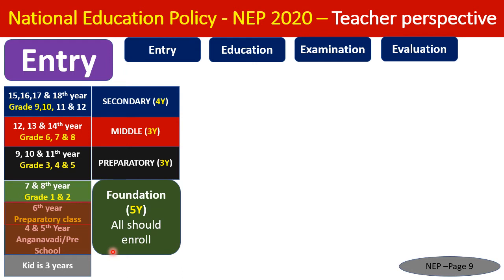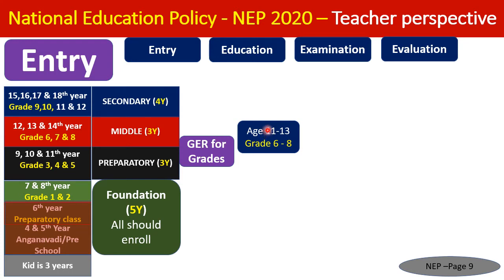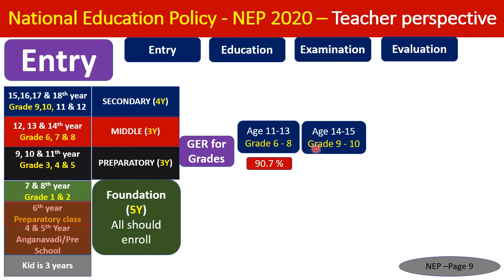Regarding the current Gross Enrollment Ratio: for kids aged 11–13 (Grades 6–8), UNESCO records show only 90.7% are in school — nearly 10% are out. For ages 14–15 (Grades 9–10), only 79.3% remain in school, meaning about 20% have dropped out. As grades increase, dropout rates also increase.